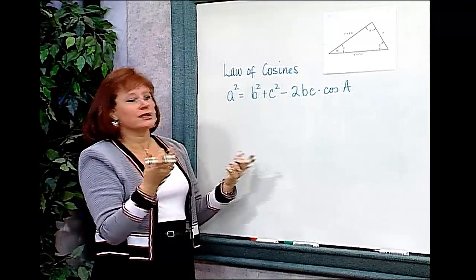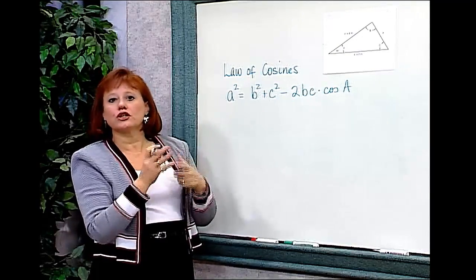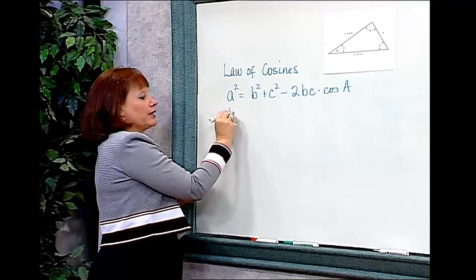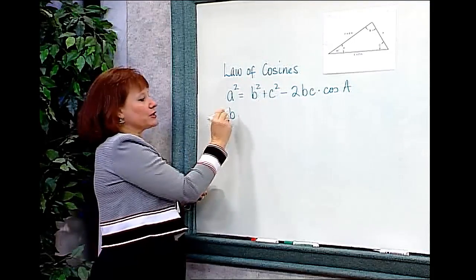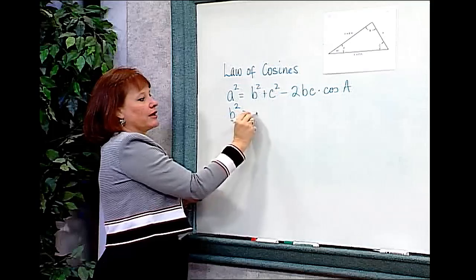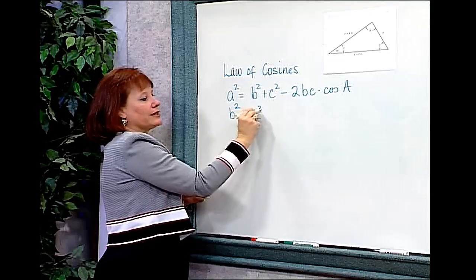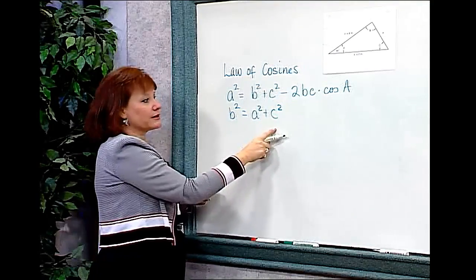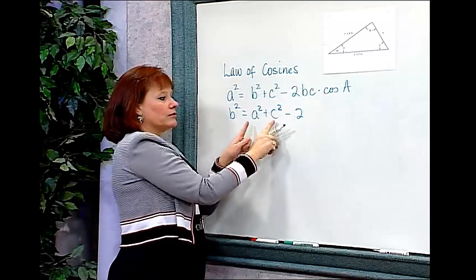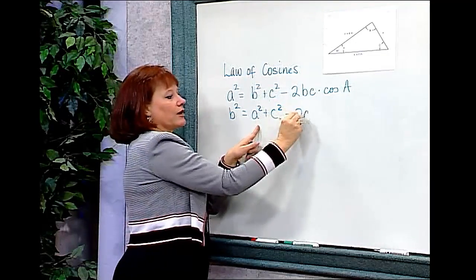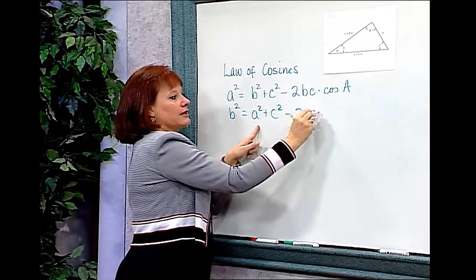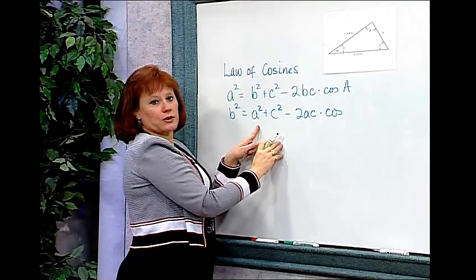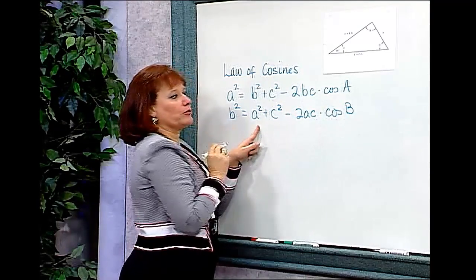You can use this for any side of the triangle, as long as you rearrange the letters appropriately. For example, if I wanted to find B, I would say B squared equals A squared plus C squared, the two other sides, minus 2 times AC, times the cosine of the angle that's between them, or the cosine of angle B.